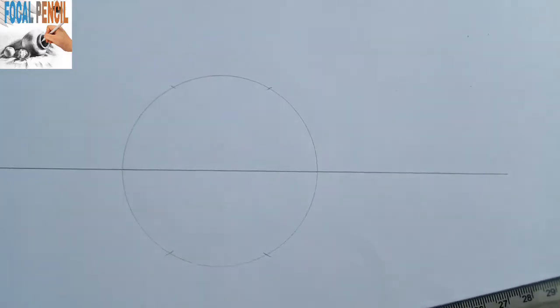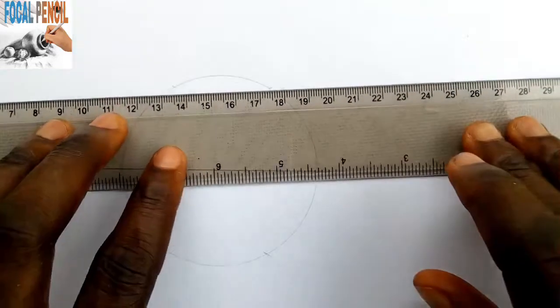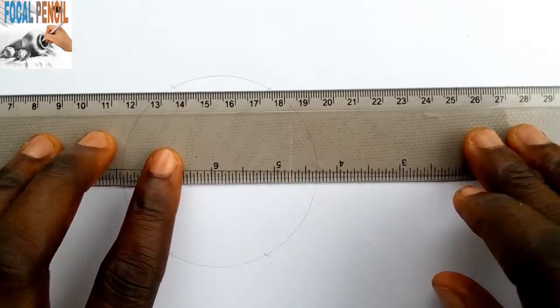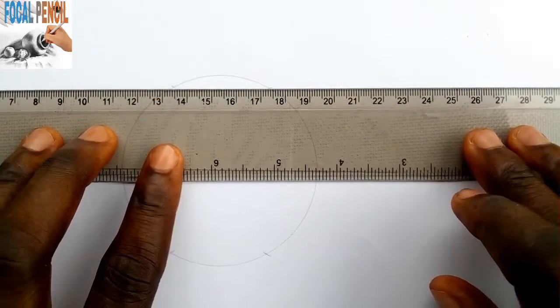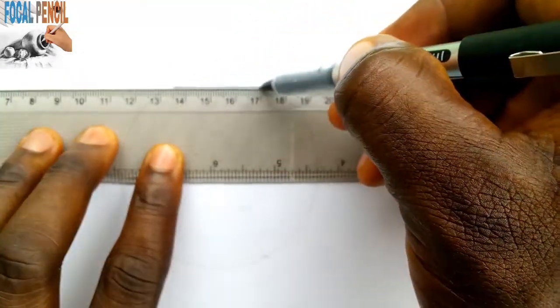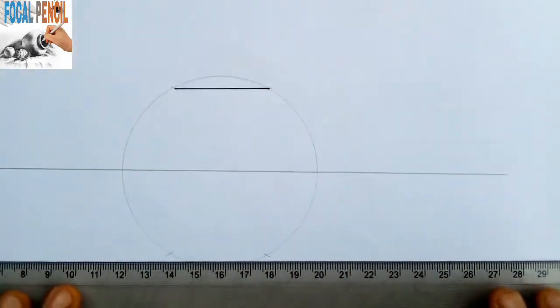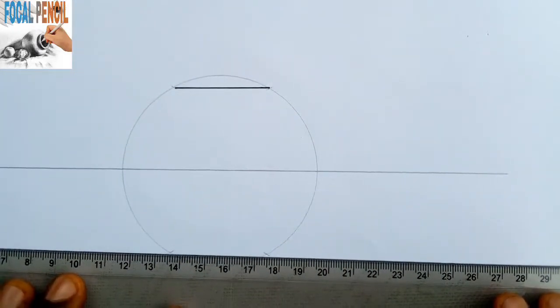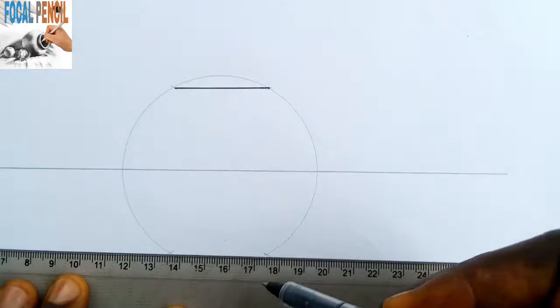After doing that, you pick up your meter rule and your pen. The arc you cut at the top most of the cycle, you join them together. Make sure they are concentric. When you are through with that, you join the lower one as well.